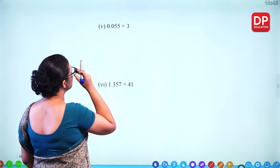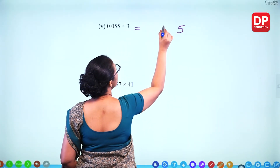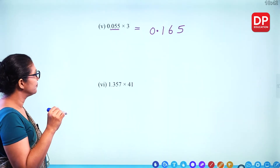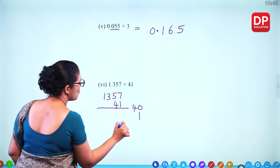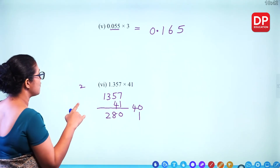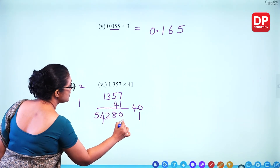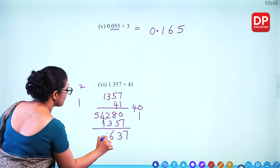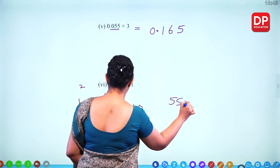For 0.055 times 3: 3 times 5 is 15 (1 remaining), 3 times 5 plus 1 is 16 — giving 165. With 3 decimal places, the answer is 0.165. For 1.357 times 41: 1357 multiplied by 41. 4 times 7 is 28 (2 remaining), 4 times 5 plus 2 is 22 (2 remaining), 4 times 3 plus 2 is 14 (1 remaining), 4 times 1 plus 1 is 5 — giving 54280. Add 1357 to get 55637. With 3 decimal places, the answer is 55.637.